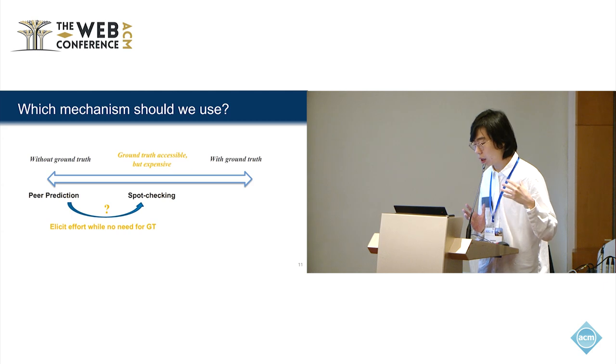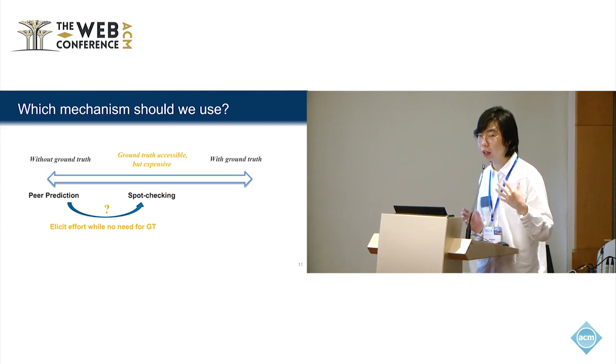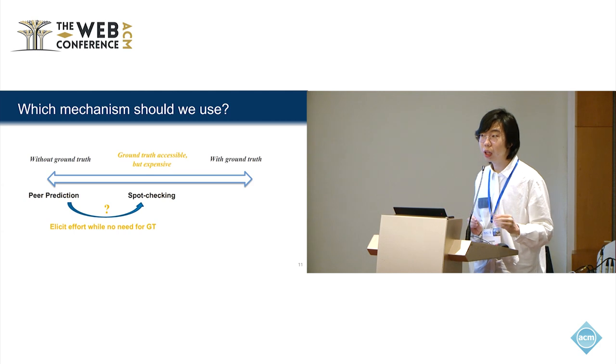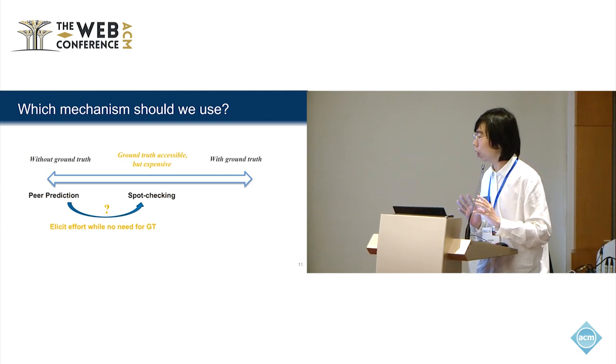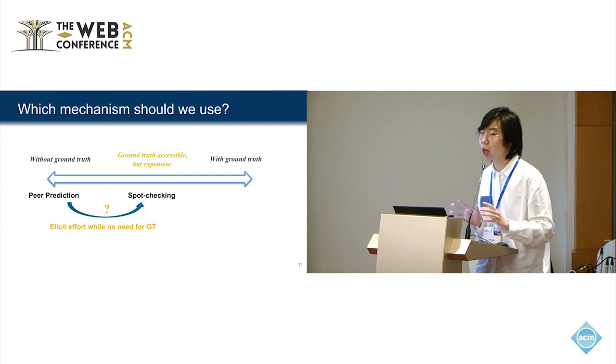Given all kinds of mechanisms, which should we use? Can we use peer prediction mechanisms to replace spot-checking mechanisms, which saves the cost of accessing the ground truth but still elicits enough effort? There has been some previous work that shows peer prediction makes things worse, but we will skip that and discuss it in the poster session if you are interested.